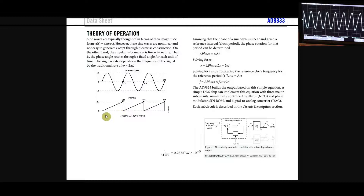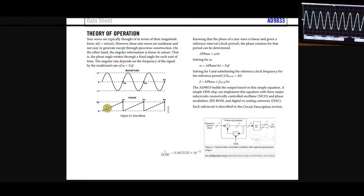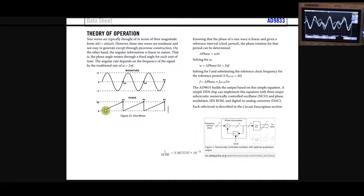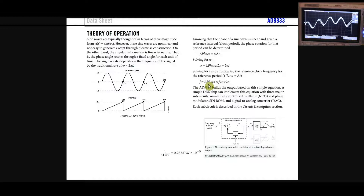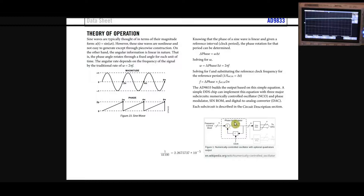Each sample we send out corresponds to a certain phase position along the wave. With a fixed sample rate of 44.1k samples per second, the interval between samples — or between phase positions — is 1 over 44.1 kHz, about 22.67 microseconds. Delta time is the time between two samples; delta phase is the difference in phase between consecutive samples. Rearranging, if we have a target frequency, the change in phase between samples becomes our tuning word — it controls how far the phase accumulator increments each clock cycle.